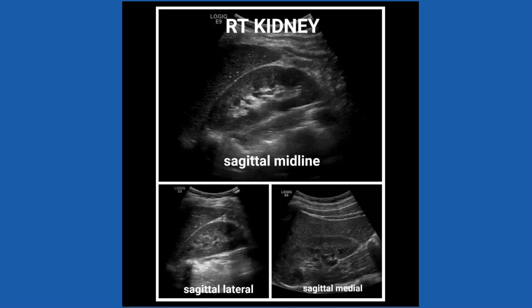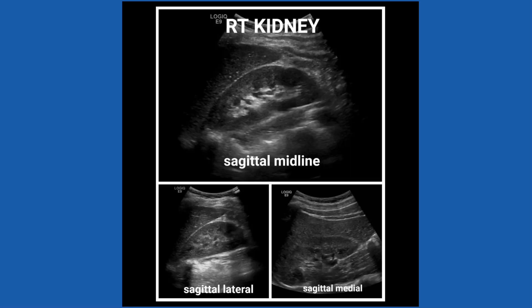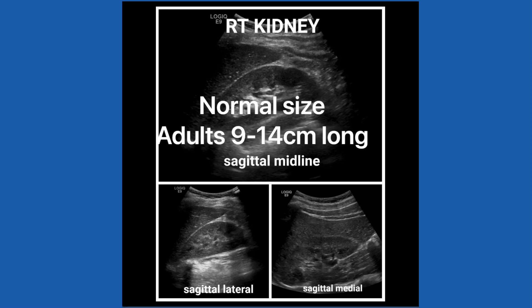Then I move up to the right kidney — take sagittal midline, medial, and lateral. You should have a minimum of three images, however you could take more, especially if there's pathology. Also, you would want to measure the longest longitudinal distance at the midline of the kidney. Some places require length, width, and height; others length only. Upper limits of normal for the adult kidney is usually between 13 and 14 centimeters, with 14 being at the higher upper limit.